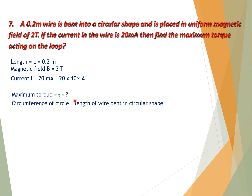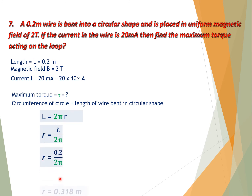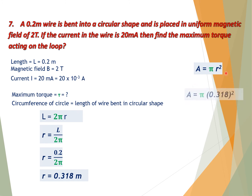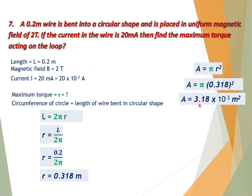Since the wire is bent into a circular shape, the length of the wire equals the circumference: L = 2πR, so R = L / (2π). Putting in the value of L and π, we get R = 0.318 m. Wait — R = 0.2 / (2π) ≈ 0.0318 m. The area is A = πR² and after solving we get A = 3.18×10⁻³ m².